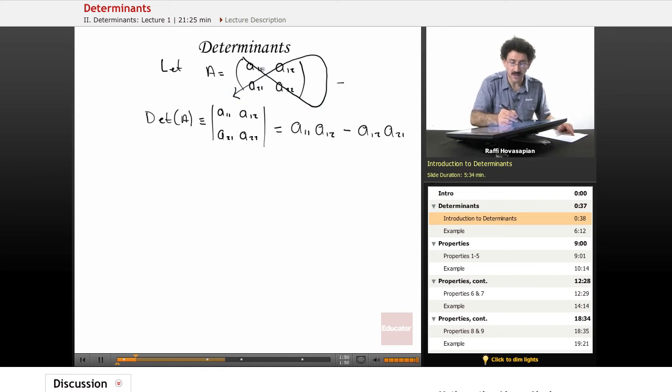The pattern is this times that minus this times that. Again, A11 along the main diagonal, this times that minus that times this, including the signs.